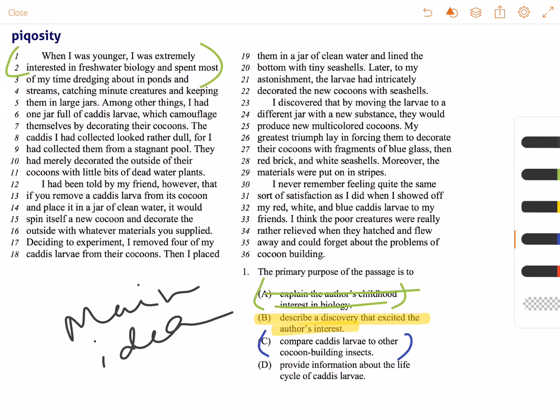C: Compare caddis larvae to other cocoon-building insects. Nowhere in here does he talk about other insects, so C doesn't work.